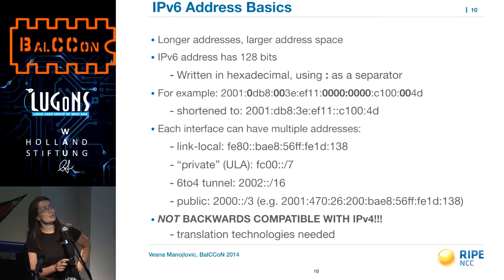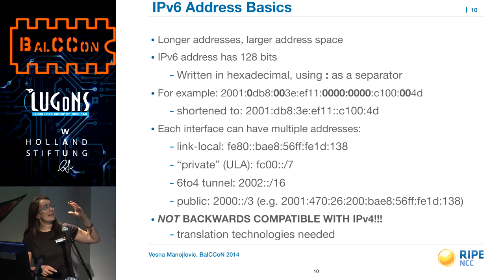These are the basics of IPv6 addressing. The addresses are much longer and written differently — with colons and hexadecimal. Every interface can have multiple addresses. The main problem with IPv6 is that once you have a V6 network, it cannot talk with a V4 network — you need translation technology. For the next however many years, we will need these translation technologies for the new internet to talk with the old internet. It's a lot of business for network operators, so learn IPv6 and you'll have a job for the next 10 years.